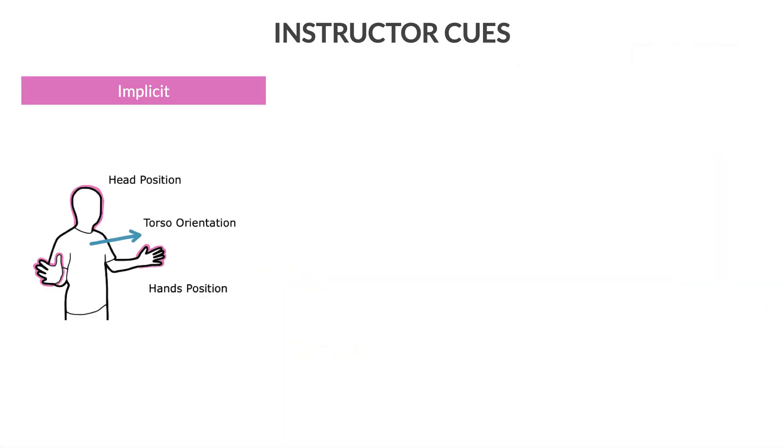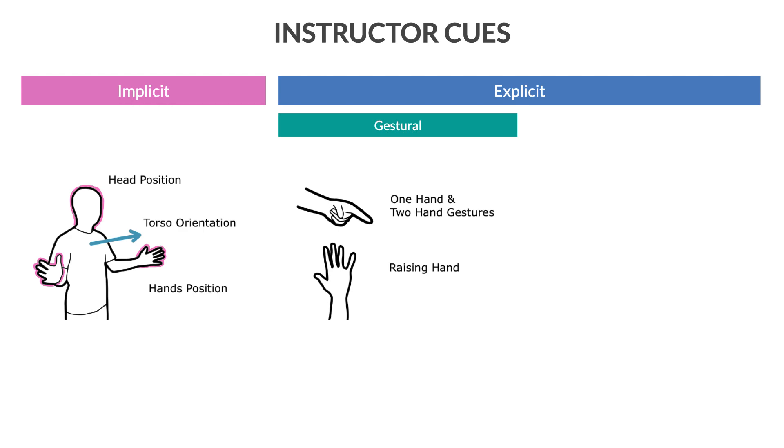These cues can be implicit, such as head position, or explicit. The explicit cues can be further divided into gestural and speech cues.